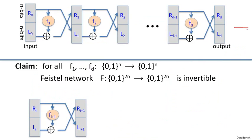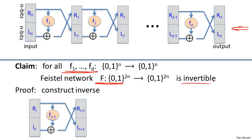The amazing claim is that for any functions f1 to fd you give me, the resulting Feistel network function is invertible. And not only is it invertible — it's efficiently invertible. We're going to prove this by constructing an inverse.